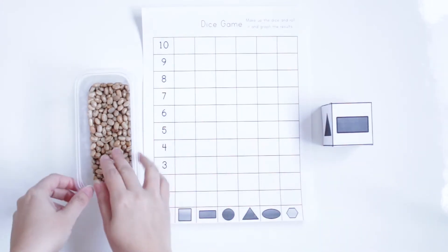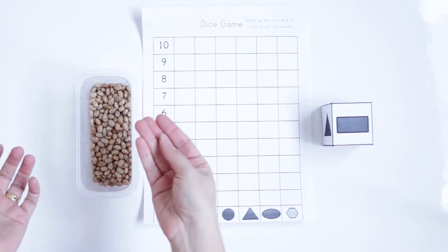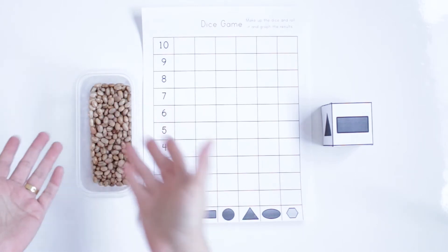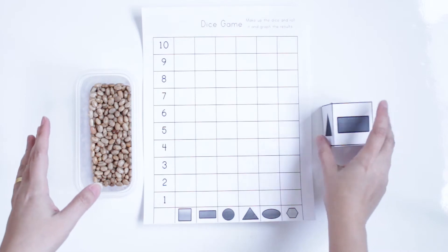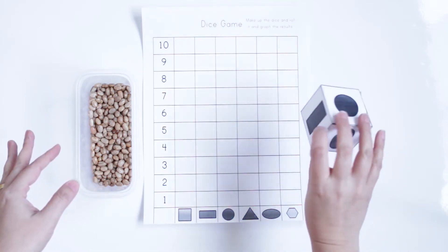To do this activity, you need to have some objects. For example, here I'm using beans, but you can use anything that you have available, and a dice with the shapes.